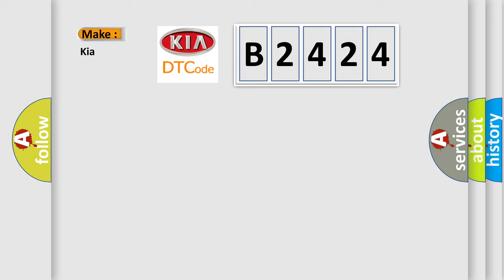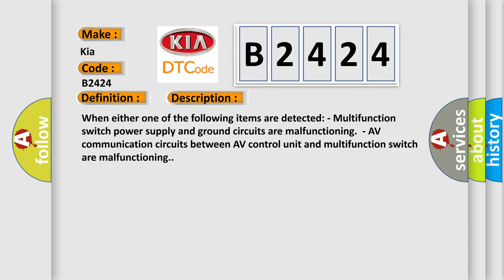So, what does the diagnostic trouble code B2424 interpret specifically? The basic definition is AV comm circuit. And now this is a short description of this DTC code.